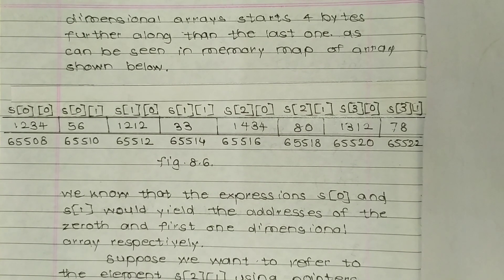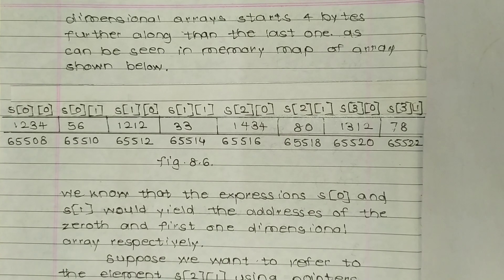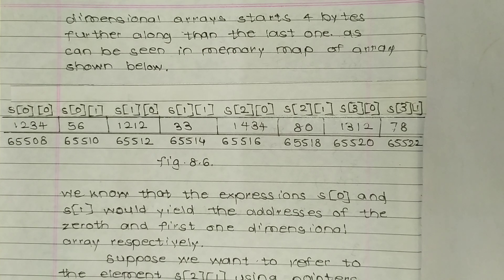As seen in the memory map: s[0][0] contains element {1,2,3,4} at address 65508; s[0][1] contains element {5,6} at address 65510; s[1][0] contains element {1,2,1,2} at address 65512; s[1][1] contains element {3,3,3} at address 65514; and s[2][0] contains element {1,4,3,4} at address 65516.